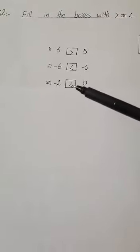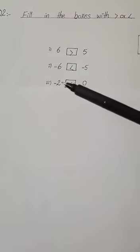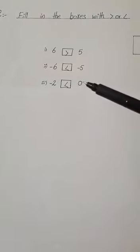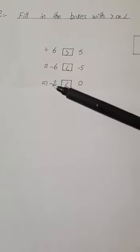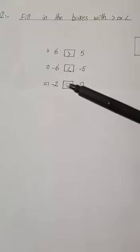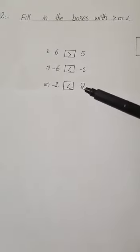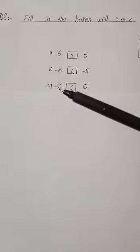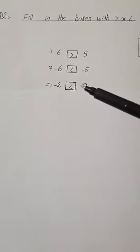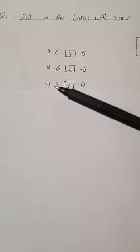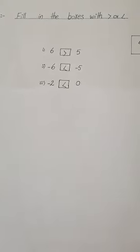In the next one, we have 0 and minus 2. Which one is greater? 0 is greater than minus 2, because 2 has the sign of minus and 0 is positive. By look, 2 appears greater, but in actual the value of 0 is greater than minus 2.